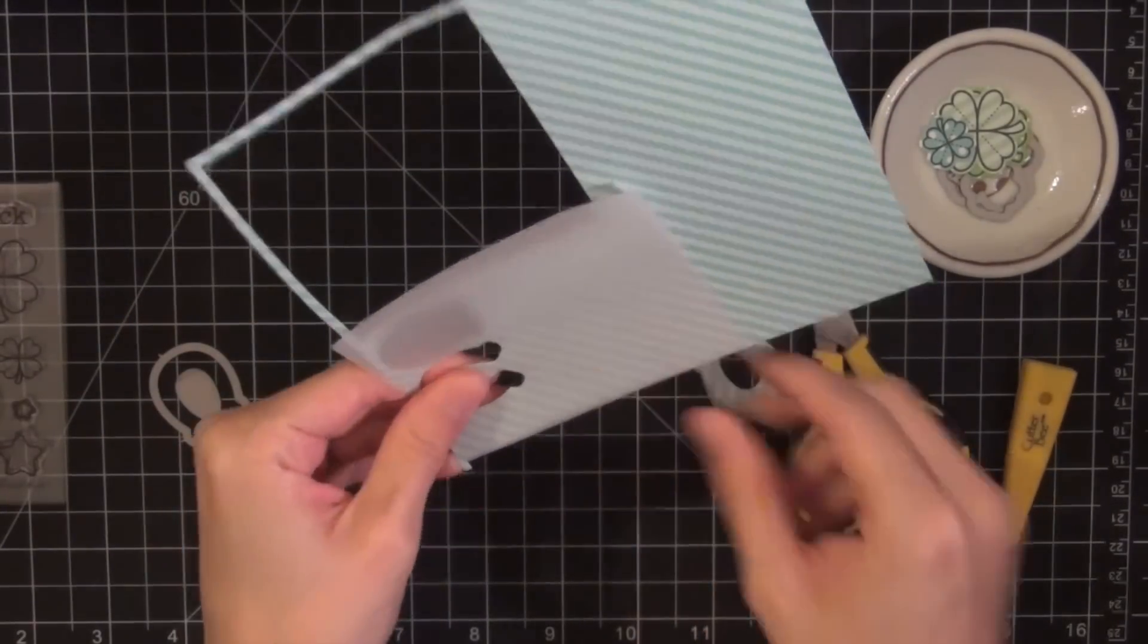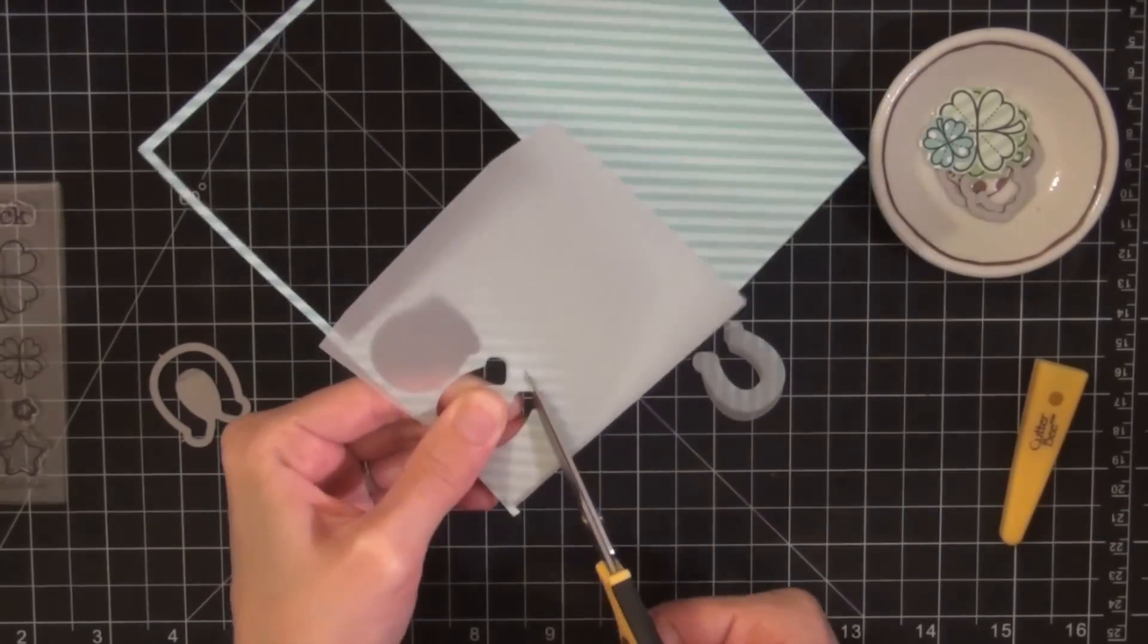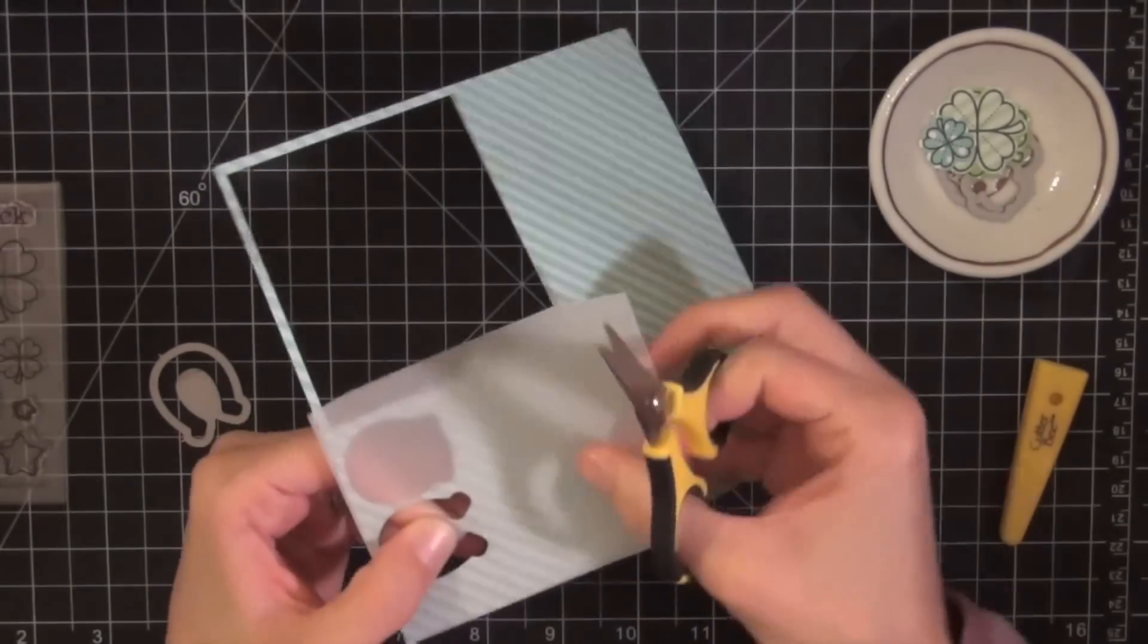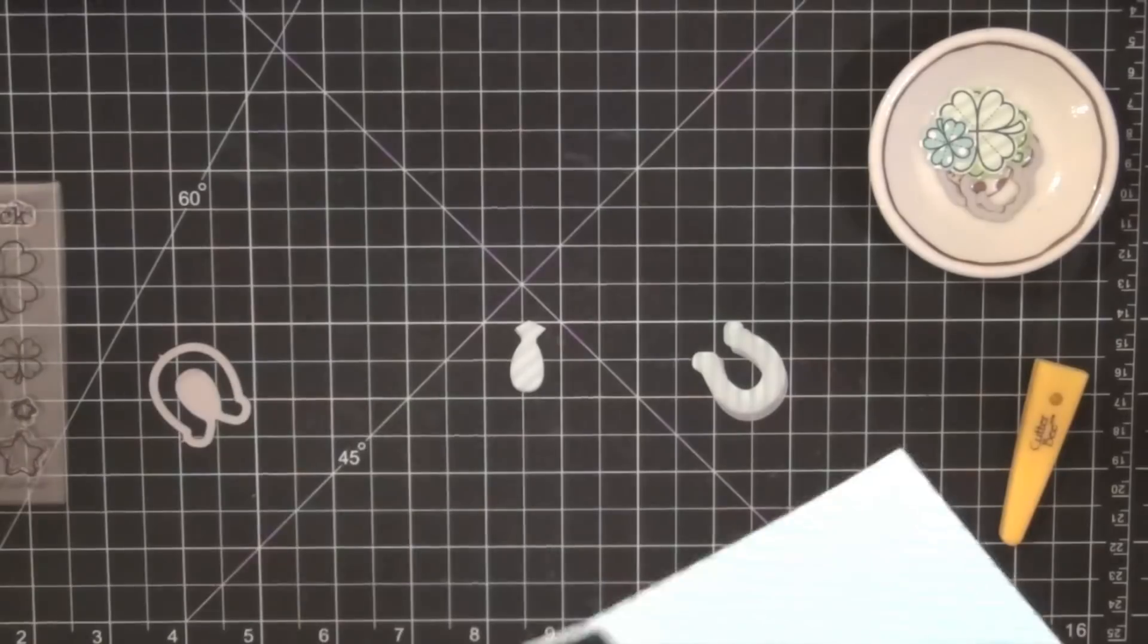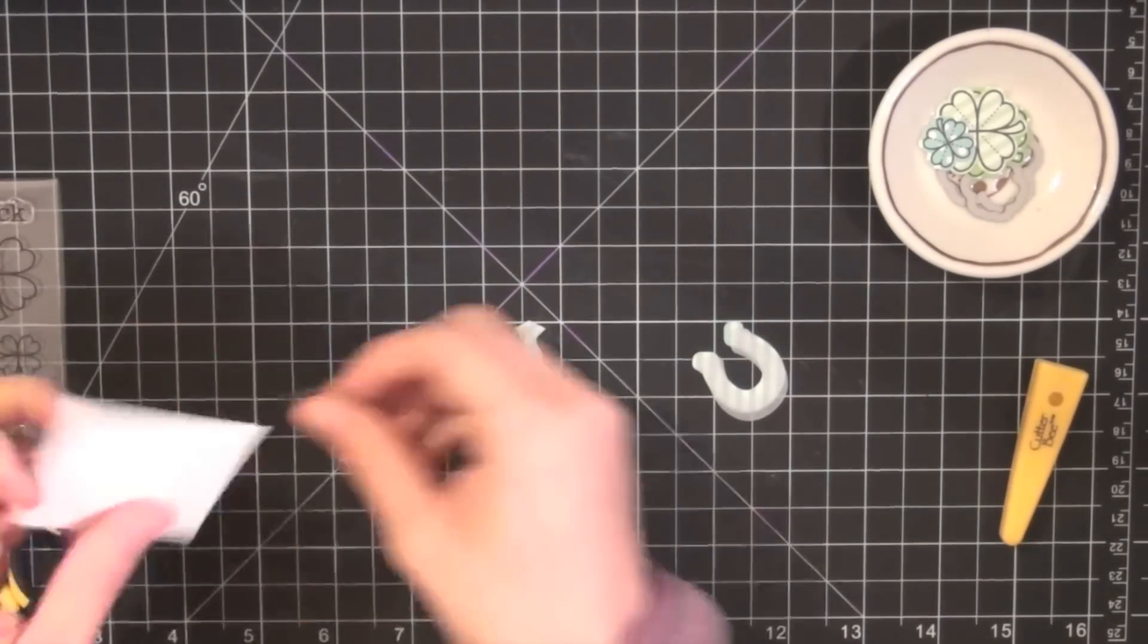I'll actually be using just the inside part of that die which I'll cut out with a pair of scissors and then I'm going to inlay that into a base that I create out of some white cardstock.